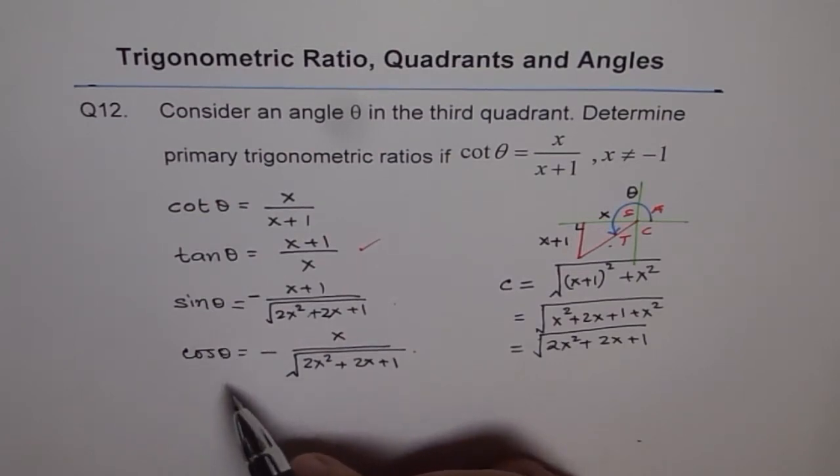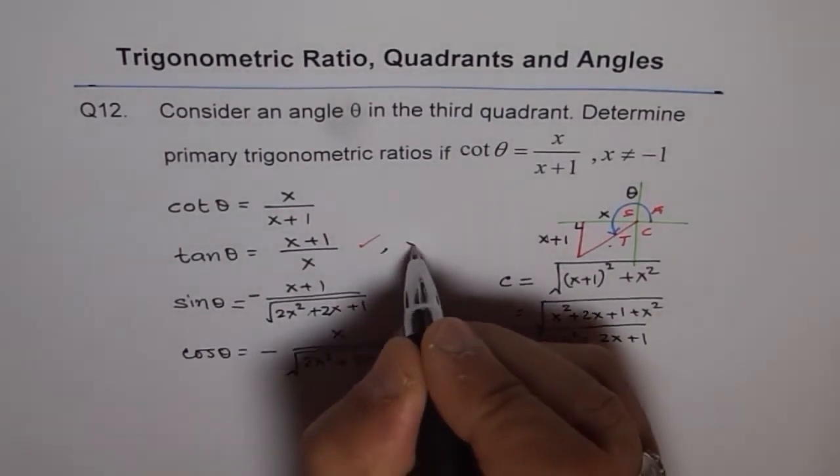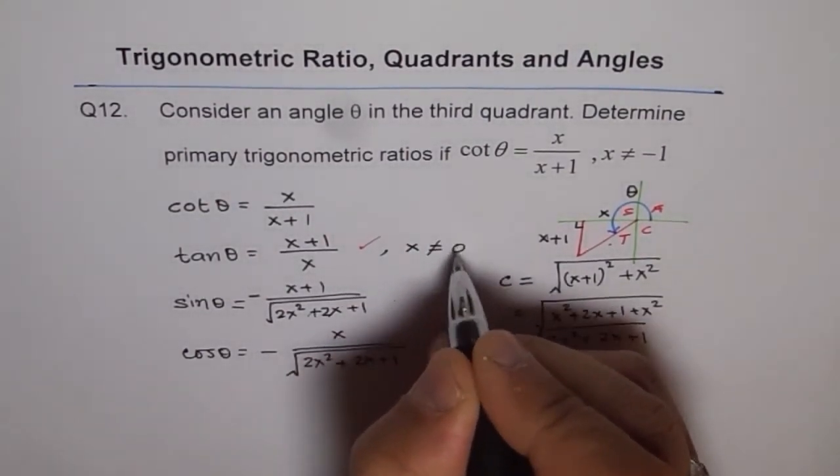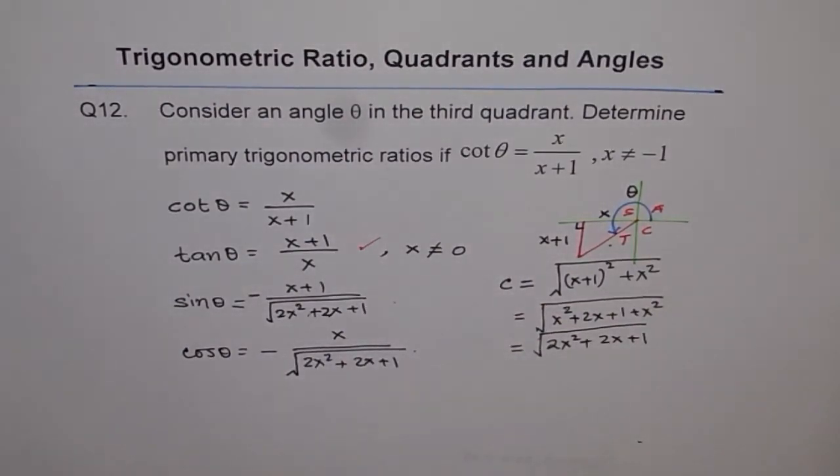We are just writing an expression for cosine and sine theta. It is always good to write whatever is clearly visible. So that is another restriction which we get from this. Thank you.